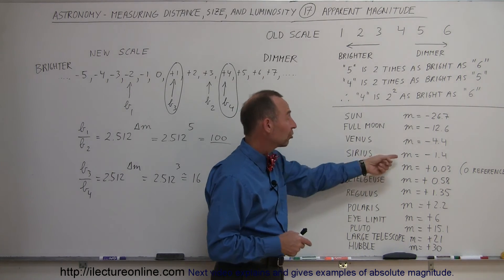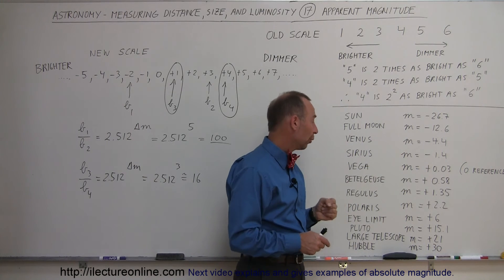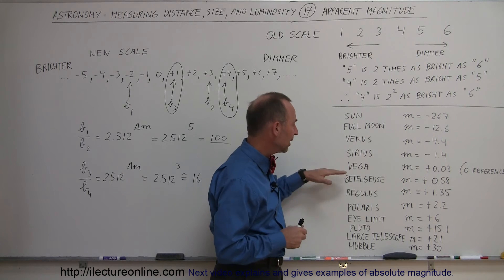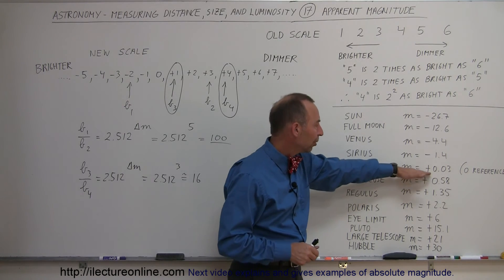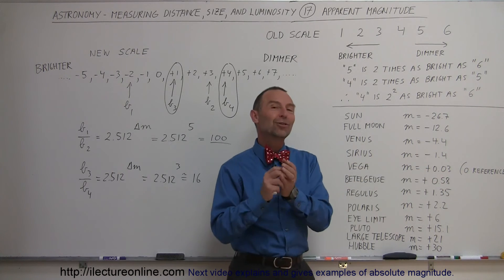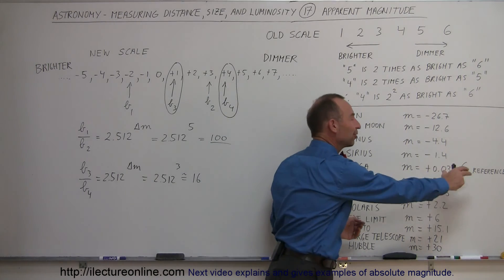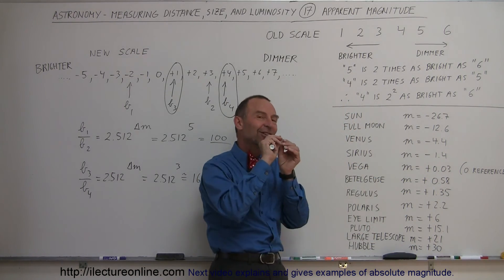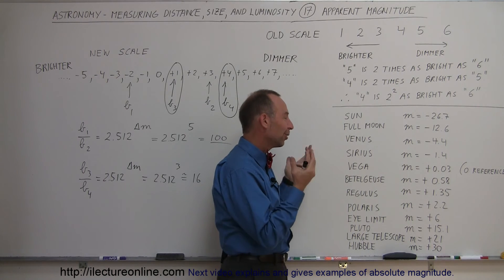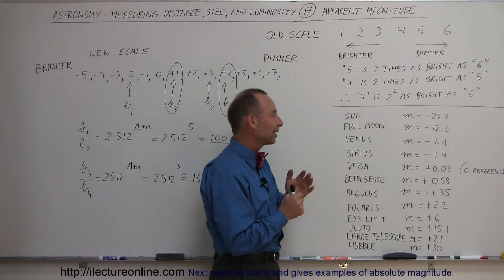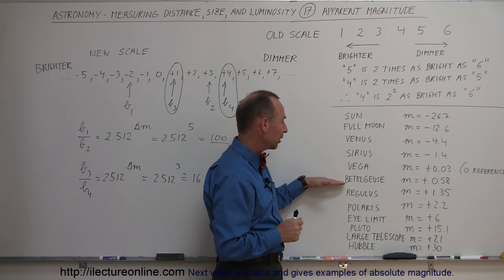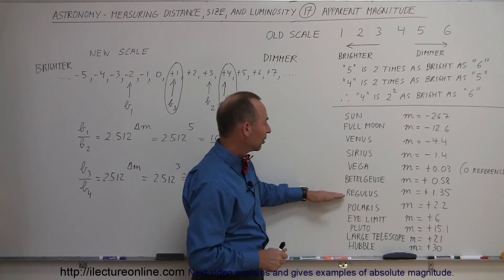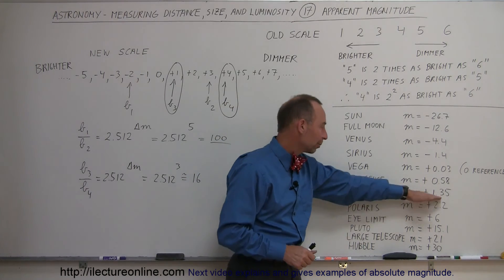Sirius, the brightest star in the sky is minus 1.4. Vega, one of the bright stars that you see primarily in the summer and evening, has a magnitude of plus 0.03. They used to use Vega as the zero reference mark, but with more accurate measurements, it turned out there was actually slightly above a zero. Betelgeuse in the constellation of Orion is 0.58. Regulus in the constellation of Leo is 1.35.